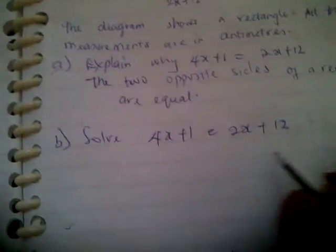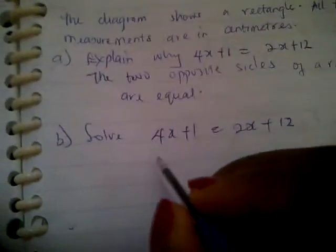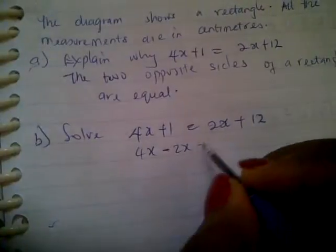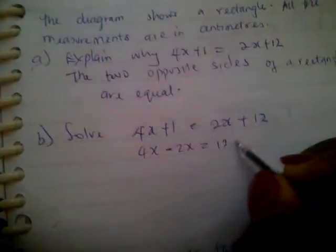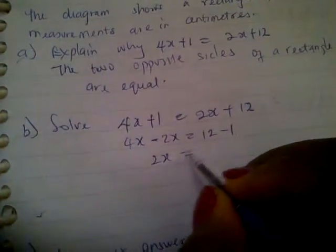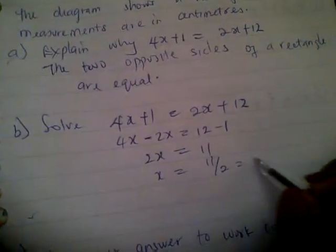We gather like terms on the left hand side: 4x minus 2x equals 12 minus 1. So 2x equals 11, and x equals 11 divided by 2, that's 5.5.